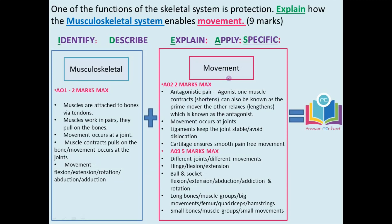Another two marks require you to apply the content to the focus of movement. Go into more detail about the antagonistic pair: the agonist (or prime mover) is the muscle that contracts and shortens; the antagonist relaxes and lengthens, producing movement at a joint. Ligaments attach bone to bone, keeping the joint stable and preventing dislocation. Cartilage ensures pain-free movement. Always bring it back to applying it to movement.